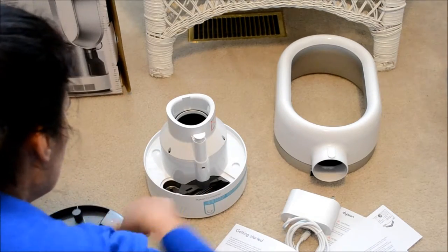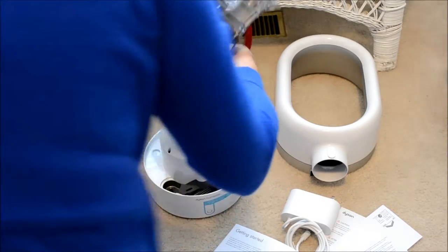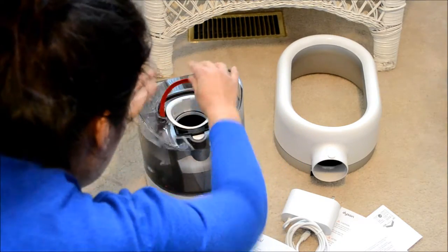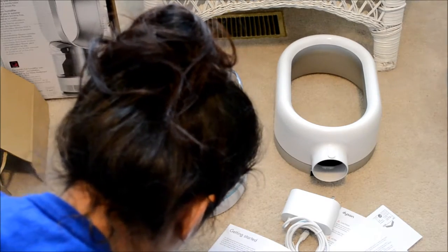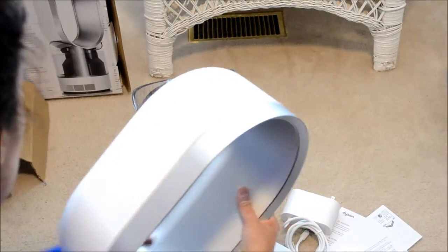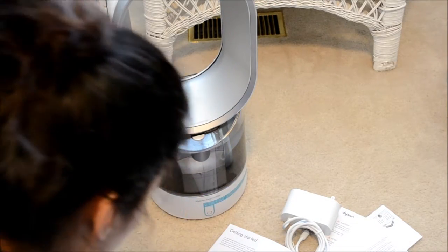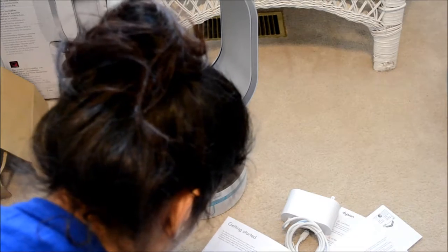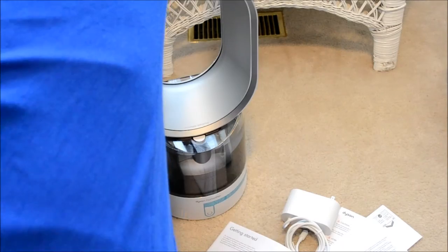This piece has to go there, okay, so I'll flip it over. It says to place the loop amplifier on top of the tank. Push down until you hear a click. There's the click. Attach the remote control. Remote control docks magnetically.